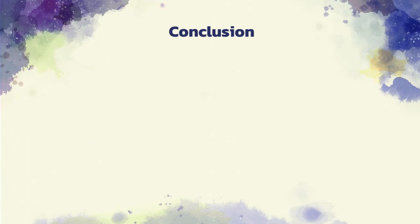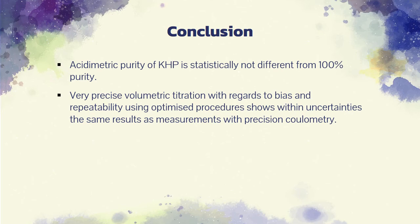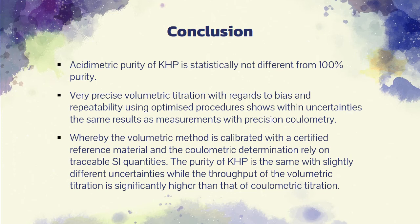In conclusion, acidimetric purity of KHP is statistically not different from 100% purity. Very precise volumetric titration with regards to bias and repeatability, using optimized procedures shows within uncertainties the same results as measurements with precision coulometry. Whereby the volumetric method is calibrated with a certified reference material, and the coulometric determination rely on traceable SI quantities. The purity of KHP is the same with slightly different uncertainties, while the throughput of the volumetric titration is significantly higher than that of coulometric titration.